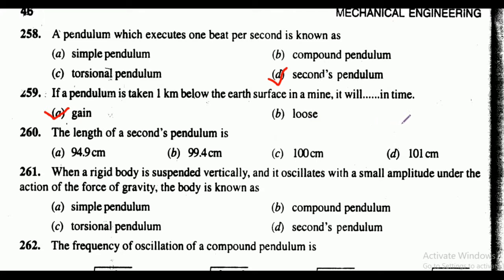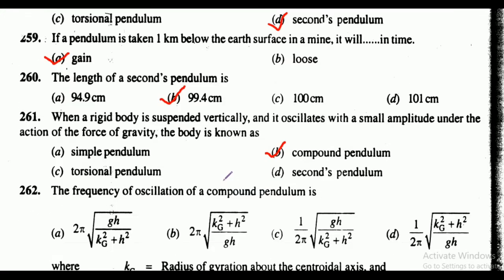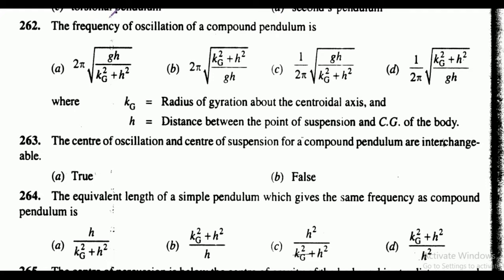Question 260: the length of a seconds pendulum. The correct answer is option B, that is 99.4 centimeters. Question 261: when a rigid body is suspended vertically and oscillates with a small amplitude under the action of the force of gravity, the body is known as — the correct answer is option B, that is compound pendulum.